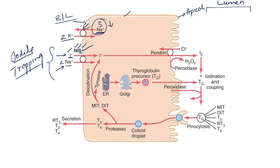The second step is synthesis of thyroglobulin with the help of the endoplasmic reticulum and the Golgi apparatus. This thyroglobulin is a glycoprotein made out of tyrosine amino acids. Once synthesized, it is transported out of the cell into the lumen by the process of exocytosis. Our thyroglobulin is now lying in the lumen of the follicle.